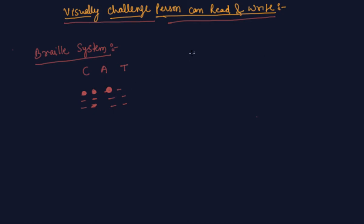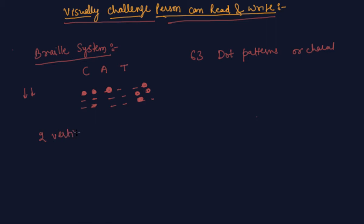There are 63 dot patterns or characters in Braille. T is represented differently, as there is a different notation for all characters. Each character represents a letter, a combination of letters, a common word, or a grammatical sign. These are arranged in a cell of two vertical columns and three rows.